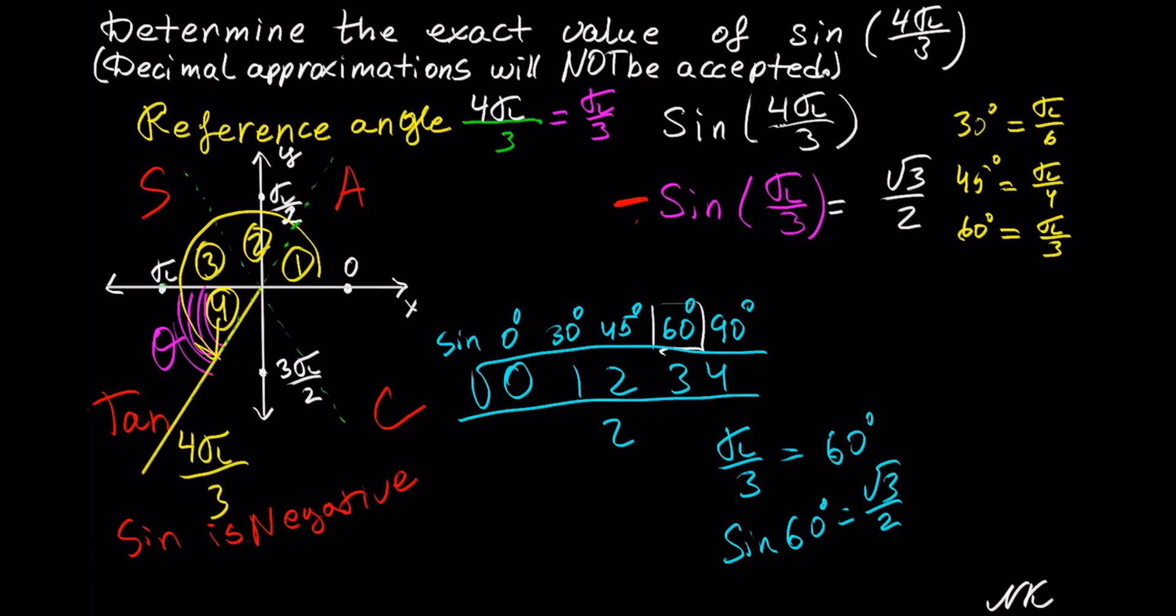And we need to remember that the sine is negative in the third quadrant. So negative √3/2. So the exact value of sine of 4π/3 is equal to negative √3/2.